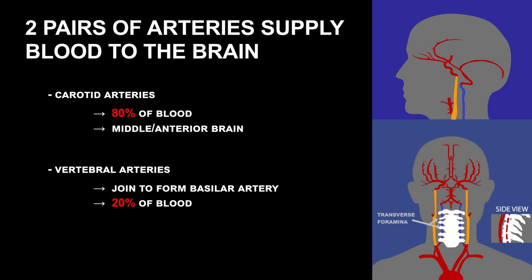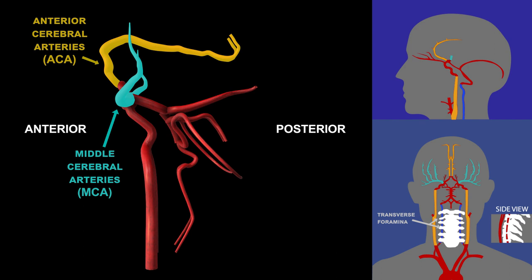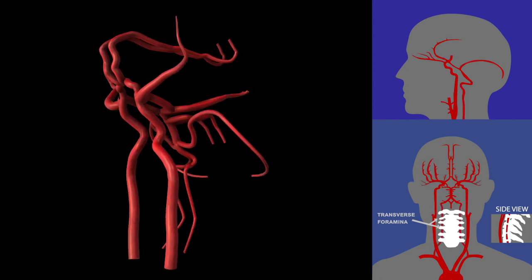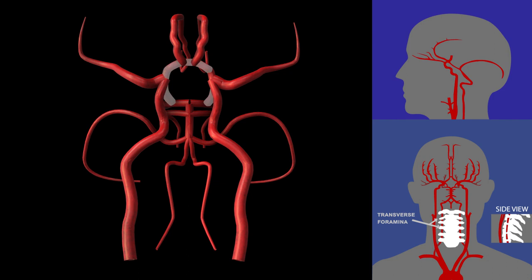This blood is supplied primarily to the posterior cranial fossa — in other words, the brainstem and cerebellum — and the occipital lobes. The anterior circulation of the cerebrum consists largely of the anterior and middle cerebral arteries, while the posterior cerebral arteries are prominent in the brain's posterior circulation. Cross flow between the anterior and posterior arteries occurs at communicating arteries in the circle of Willis, which decreases damage in case of impairment of blood flow from either end.